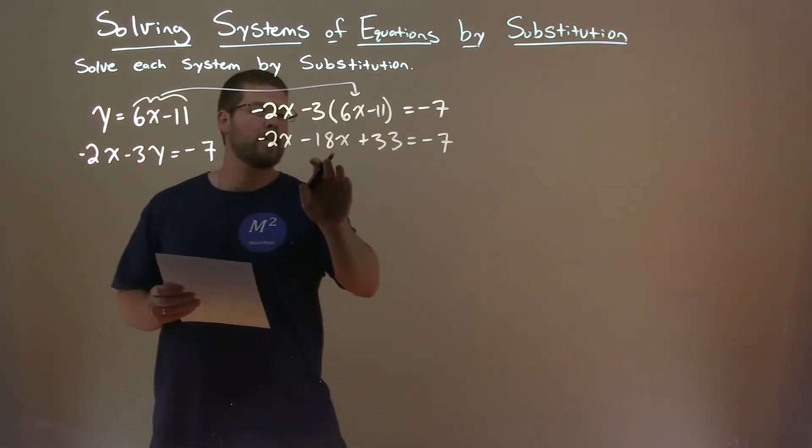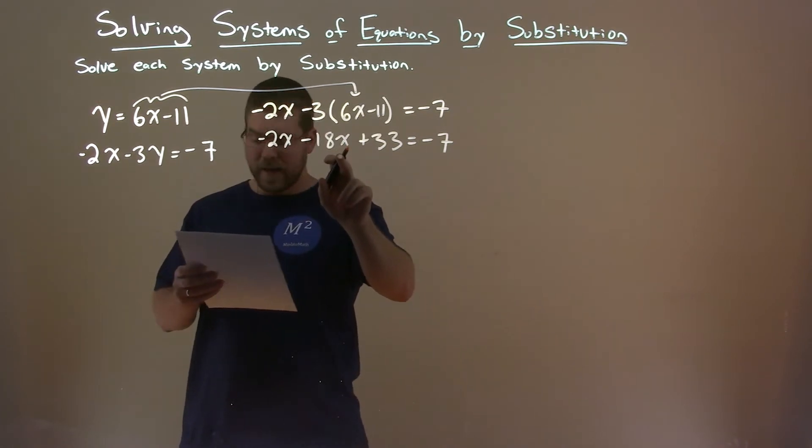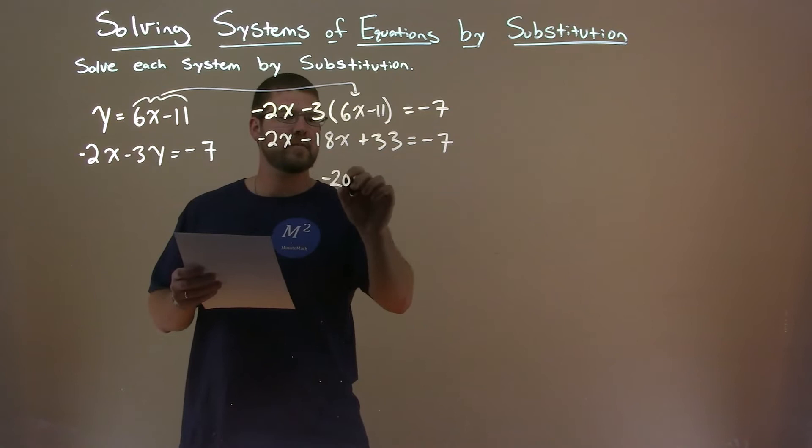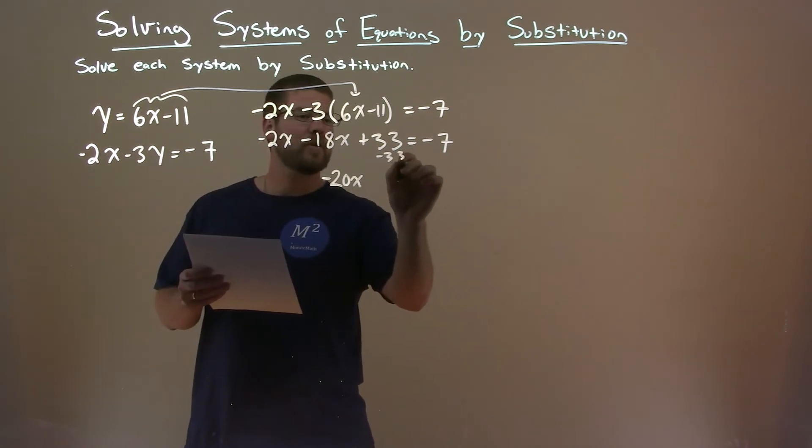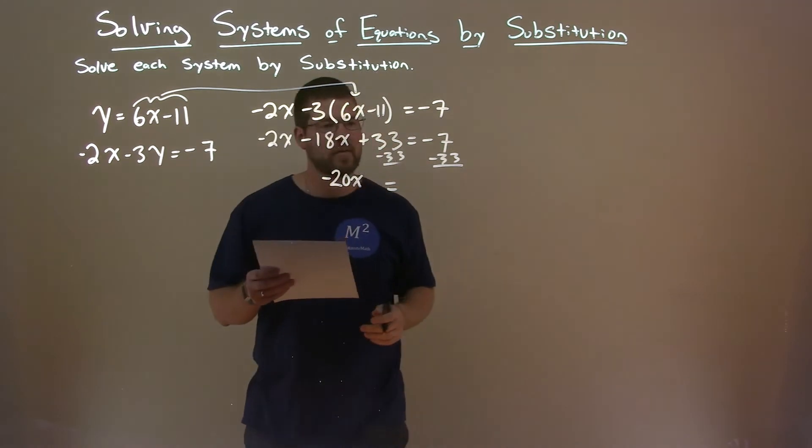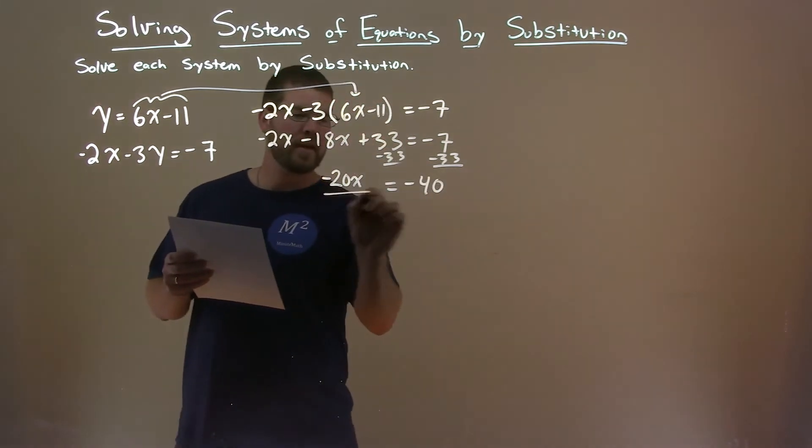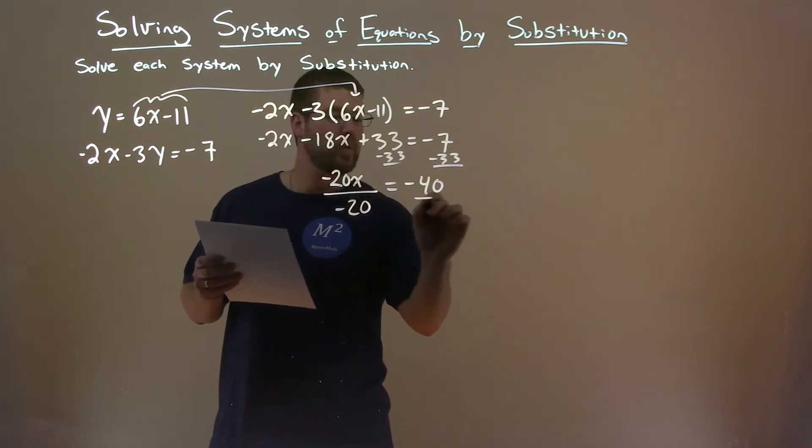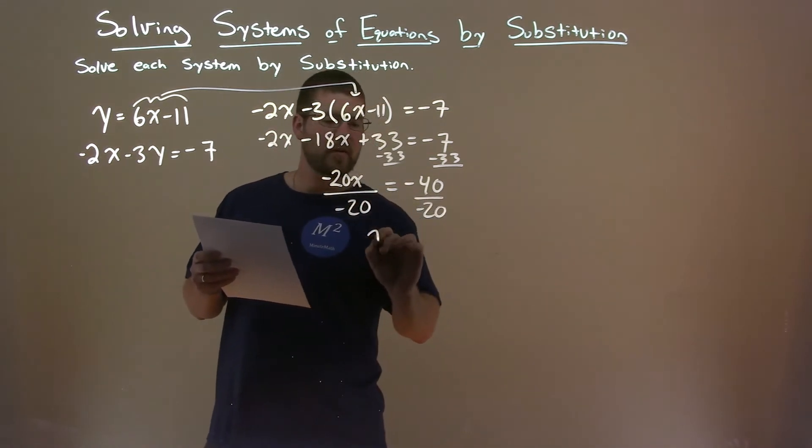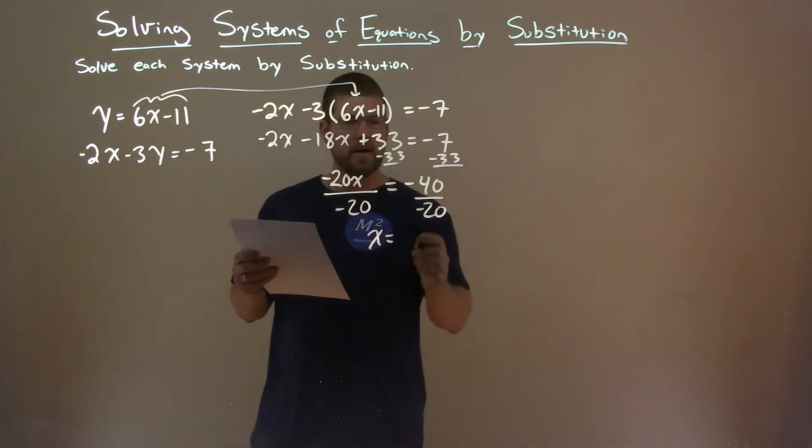From there, we want to combine our like terms. Negative 2x and negative 18x is negative 20x. We're subtracting 33 from both sides, and we're left with negative 7 minus 33, which is minus 40. We then divide both sides by minus 20, and we're left with x by itself. Negative 40 divided by negative 20 is a positive 2.